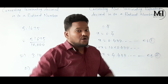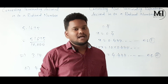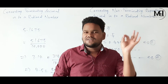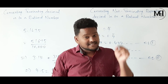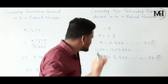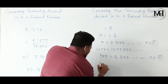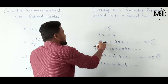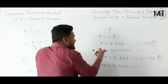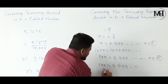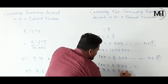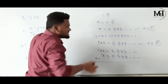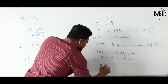We have followed points 1 and 2. Now point 3: subtract equation 1 from equation 2. Equation 2: 10X = 4.444... Subtracting equation 1: X = 0.444... So 10X minus X gives 9X.